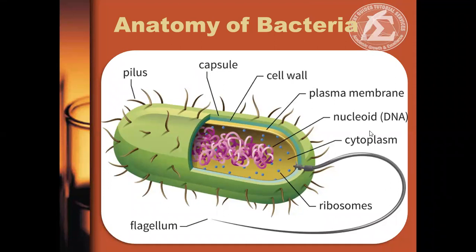They function as independent organisms in pairs, clusters, or chains. The cellular structure of bacteria includes the following: the cell wall, an outer covering that gives protection and shape to the cell; the capsule, an additional covering that protects the cell, helps retain moisture, and helps the cell adhere to surfaces and nutrients; and the plasma membrane, which encloses the cytoplasm where the nucleoid material and ribosomes are suspended.